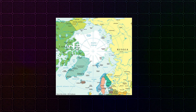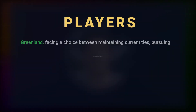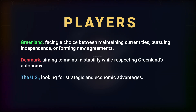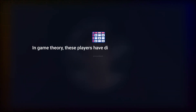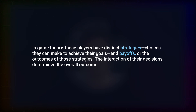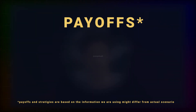Now, let's use game theory — a branch of mathematics and economics — to analyze how different players interact and make decisions. The players are: Greenland, facing a choice between maintaining current ties, pursuing independence, or forming new agreements; Denmark, aiming to maintain stability while respecting Greenland's autonomy; and the U.S., looking for strategic and economic advantages. In game theory, these players have distinct strategies — choices they can make to achieve their goals — and payoffs, the outcomes of those strategies. The interaction of their decisions determines the overall outcome, and each player's payoff depends on their decisions and those of others.